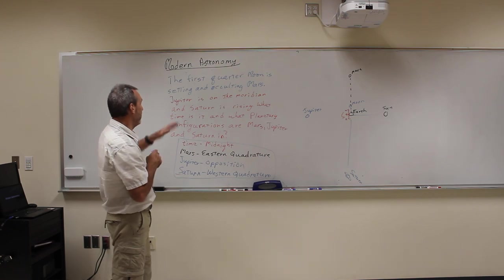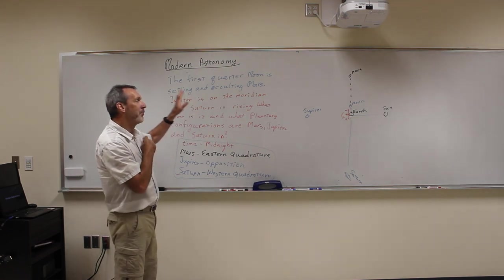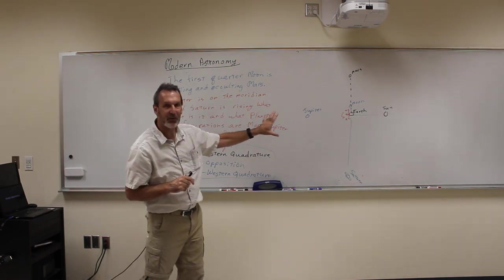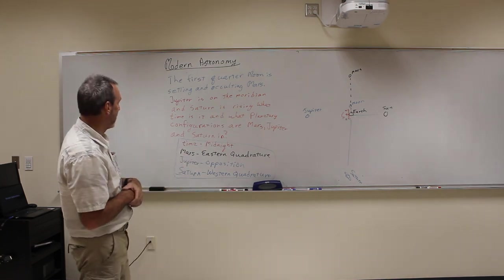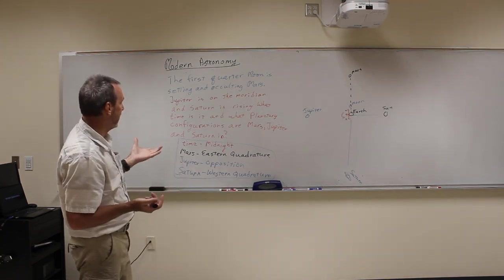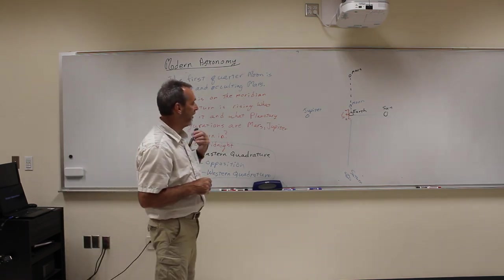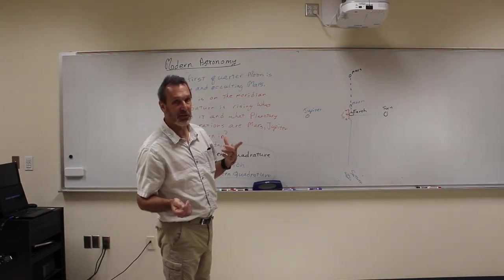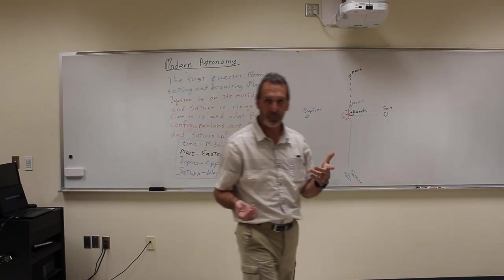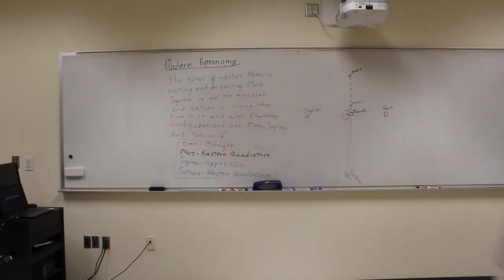So when you read the question, you say, oh, how am I going to figure this out? But it's not that bad. Once you draw the picture, it all kind of makes sense. And that is planetary configurations. Okay, the next thing we're going to do is we're going to start talking about how modern astronomers use these things to figure out things about the solar system. I'm going to get to the focus.